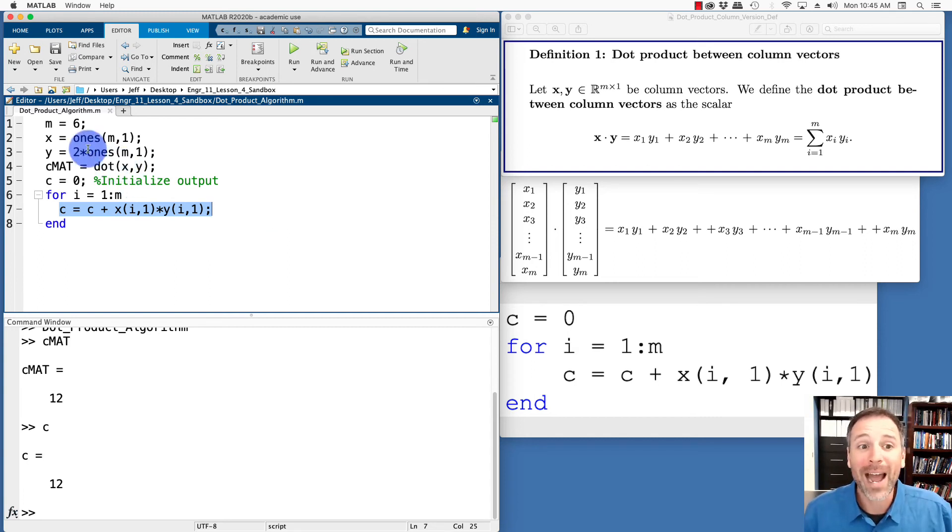Community challenge for you all. What would happen if I change these from column vectors to row vectors? How would the definition of the dot product change? Also how would this algorithm change? Another one is, what if you wanted to code up an algorithm using MATLAB syntax that would work independent of whether or not these were column vectors or row vectors?